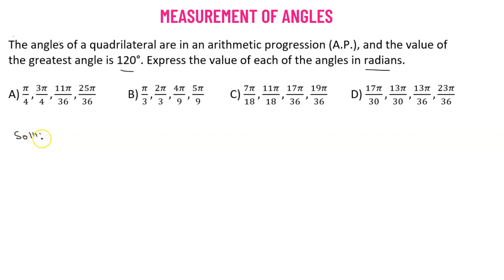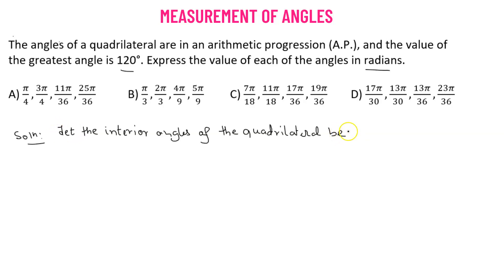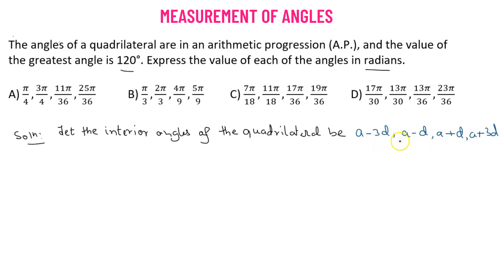Since the four angles of the quadrilateral are in arithmetic progression, we have to choose the angles in a very careful fashion. We will consider the interior angles as a minus 3d, a minus d, a plus d, and a plus 3d. These angles are chosen so that the common difference is 2d and the numbers form an arithmetic progression.